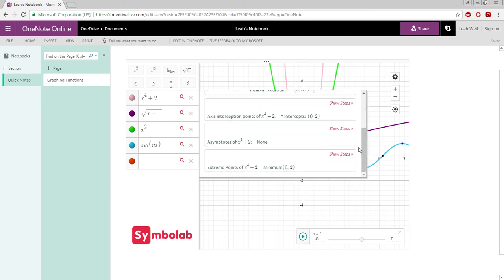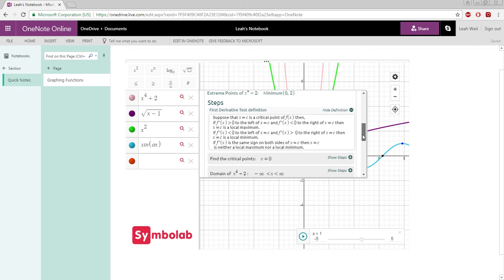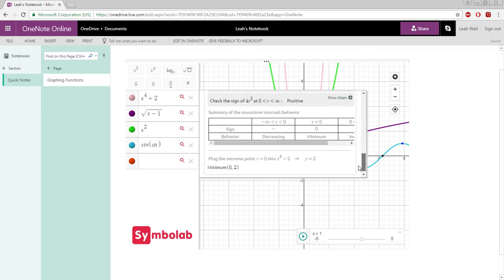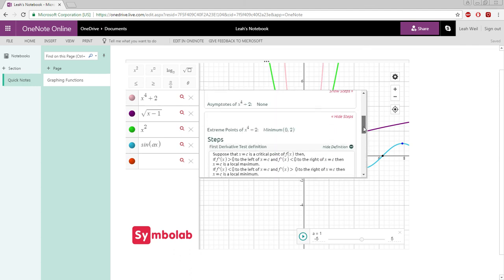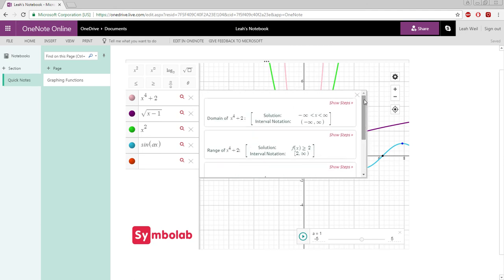If you want to see how to get that function property, just click Show Steps, and this will give you a step-by-step solution. To get out of the steps, just click Hide Steps. We'll go ahead and click out of this.